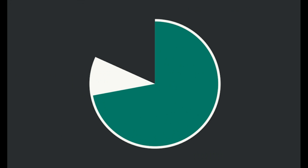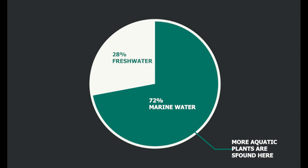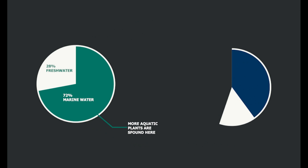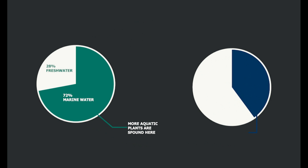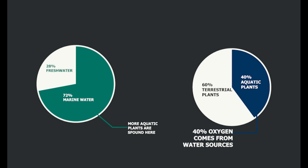As water covers around 72% of the total area of Earth, a lot of plants are found in aquatic habitats. 40% of photosynthesis takes place from aquatic plants, which means that 40% of total oxygen comes from water sources.